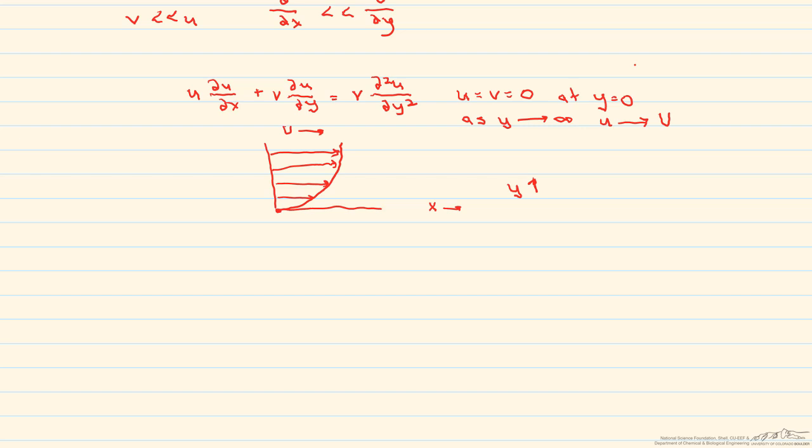This is done by introducing what's known as a similarity variable, eta, which is equal to y times the square root of the free stream velocity U divided by the kinematic viscosity times x.